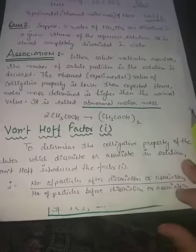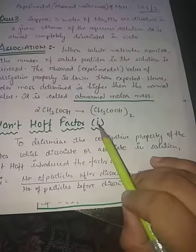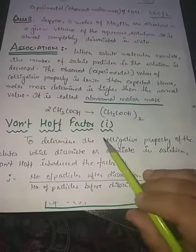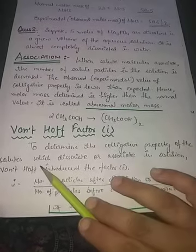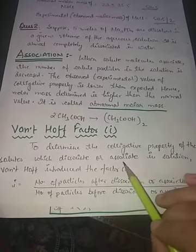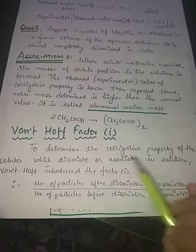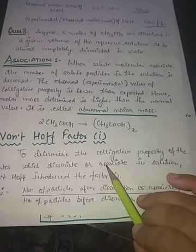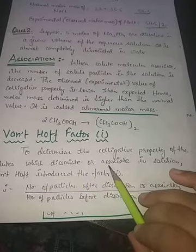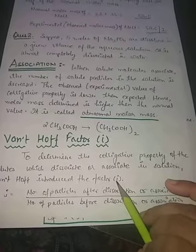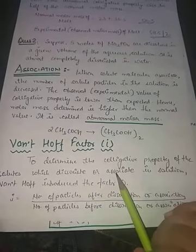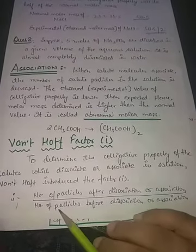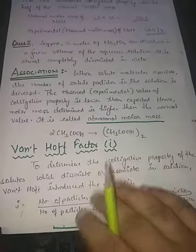Now we will see how to calculate the Van't Hoff factor. This Van't Hoff factor helps when the substance gets associated or dissociated — it helps us find and determine the colligative property of solutes which dissociate or associate in solution. Van't Hoff introduced a factor 'i'. This happens with a few substances, not all — like sugar or glucose will not dissociate or associate at all, so in that case the value of i will be one only. The Van't Hoff factor i equals the number of particles after dissociation or association upon the number of particles before dissociation or association.